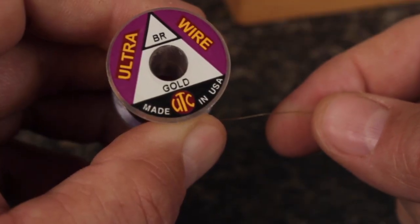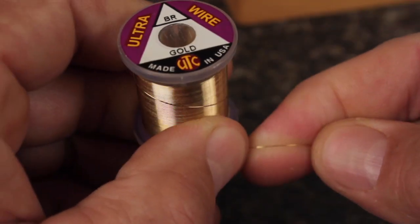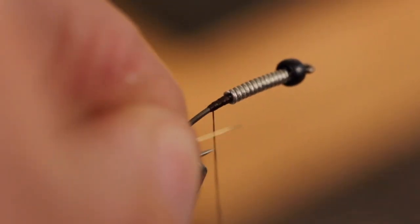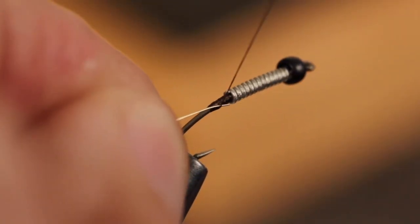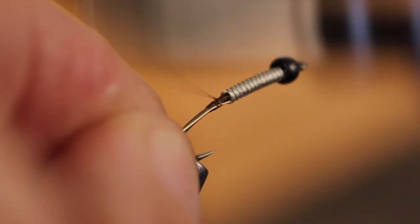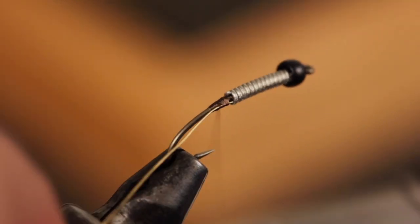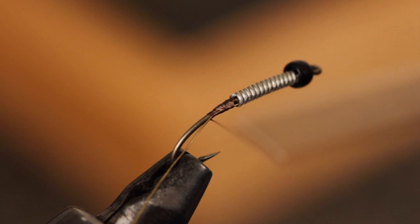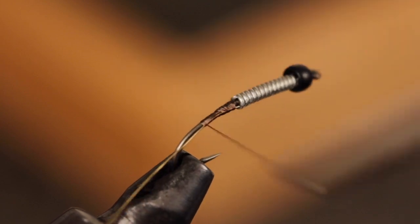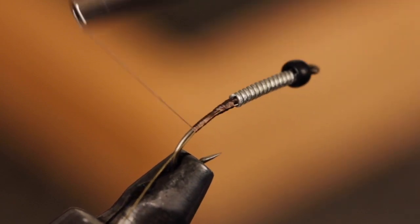Brassy sized gold ultra wire will be used to rib the fly. About a 3 inch piece is all that's needed. Attach one end of the wire to the near side of the hook so it butts up against the weight. Take thread wraps rearward securing the wire to the near side of the hook. Go all the way back to above the hook barb.